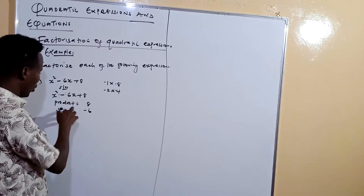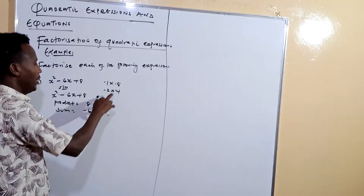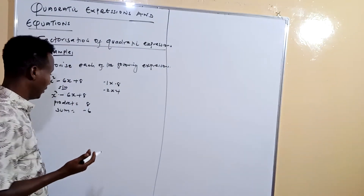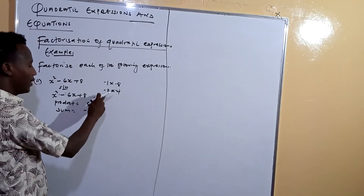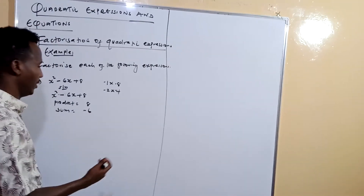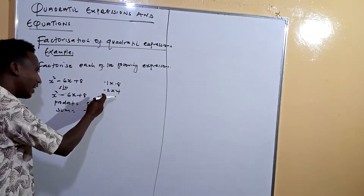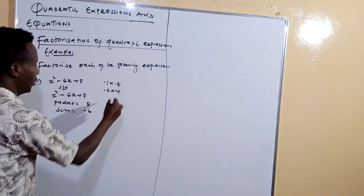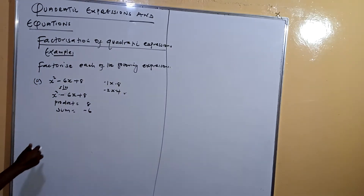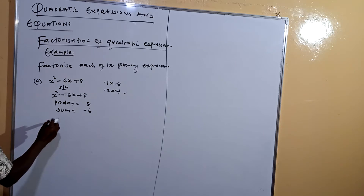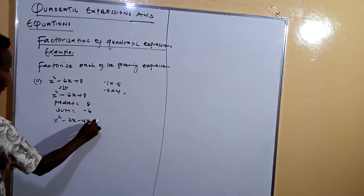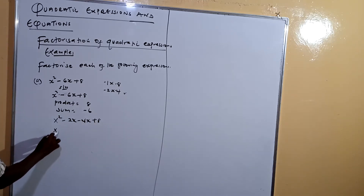Negative 1 plus negative 8 equals negative 9 — that doesn't match the sum. But negative 2 times negative 4 gives positive 8, and negative 2 plus negative 4 equals negative 6. So we take these two. We replace negative 6x with negative 2x minus 4x, giving us x squared minus 2x minus 4x plus 8.